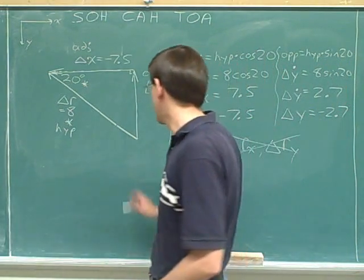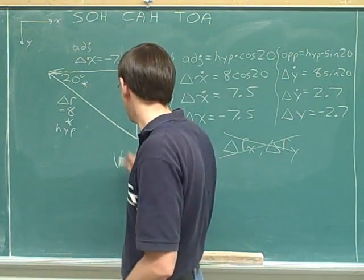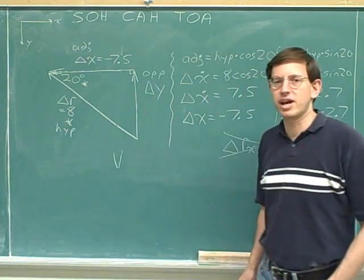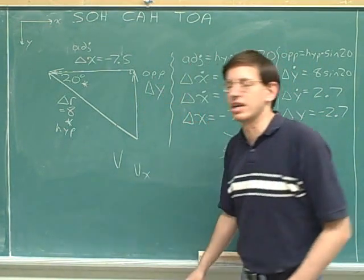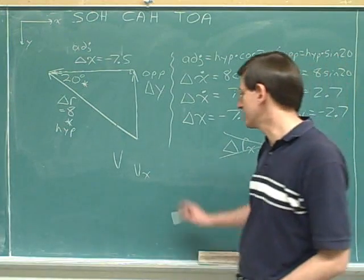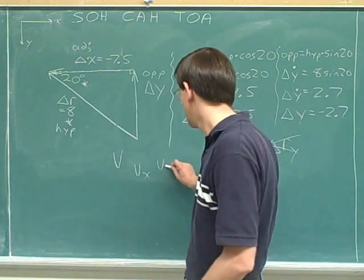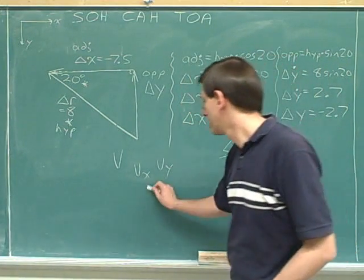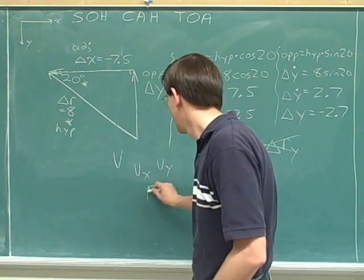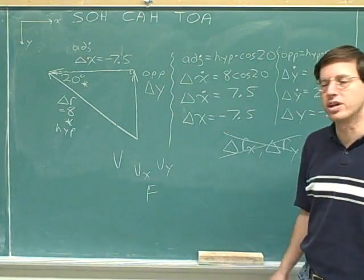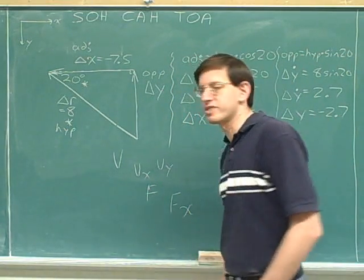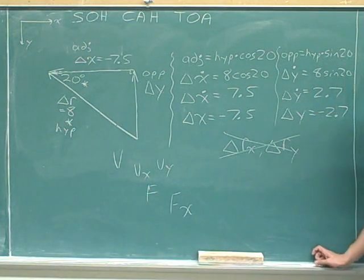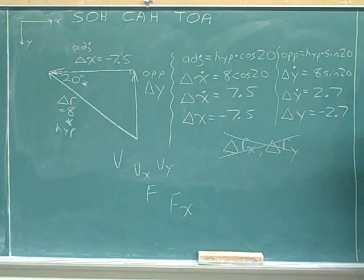Most other variables are more straightforward. The X component of velocity is V sub X, the Y component is V sub Y, and the X component of force is F sub X. So usually we use subscripts to indicate X and Y components — but not for displacement. Displacement is the exception to that rule.